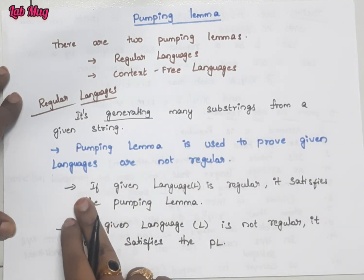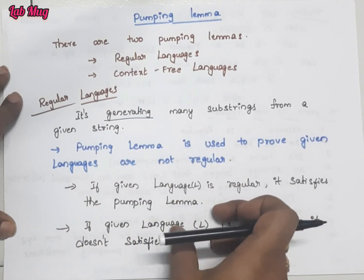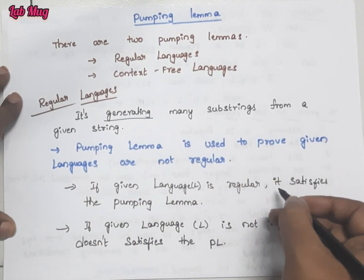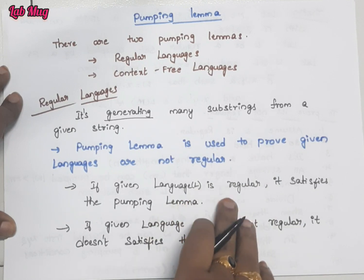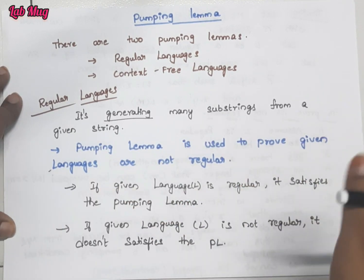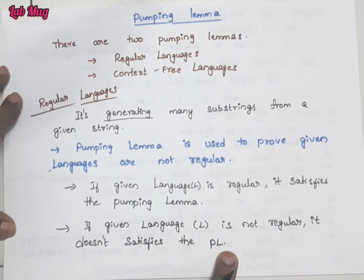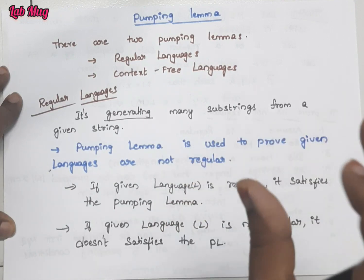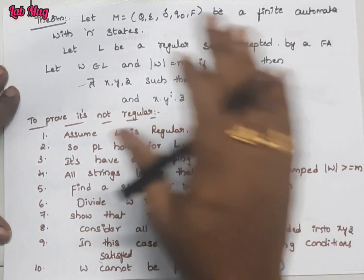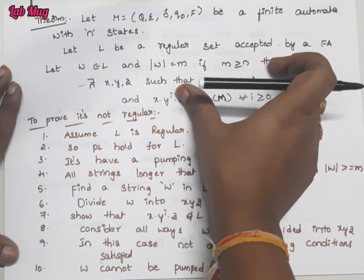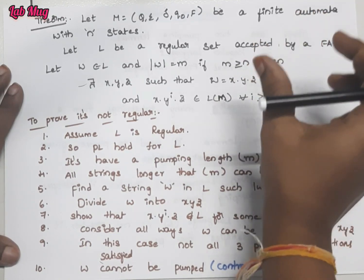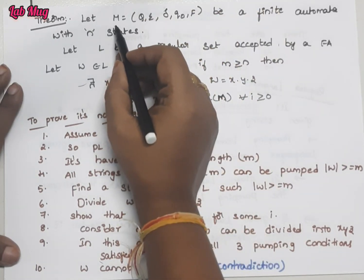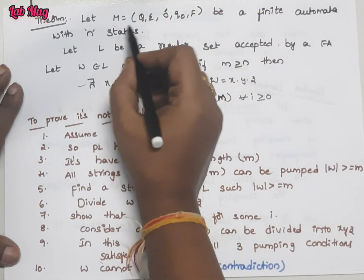Assume chestham, taravata adhi prove avvakapothe — so that's why 'it is not regular' ani prove cheyalantaru. So dhani koosam first of all, given language L ithe manam 'L is regular' ani chepti tiskuntam. And ee di pumping lemma satisfy chepte manam assumption tiskuntam. So eppudu L is regular oh — then it satisfies the pumping lemma. So eppudu L is not regular — it does not satisfy the pumping lemma rules. So aa situations lo manam pumping lemma rules apply chesi ela solve cheyalante tilsukovalani — very very important theorem in pumping lemma.